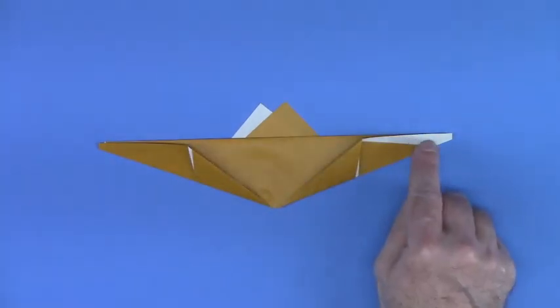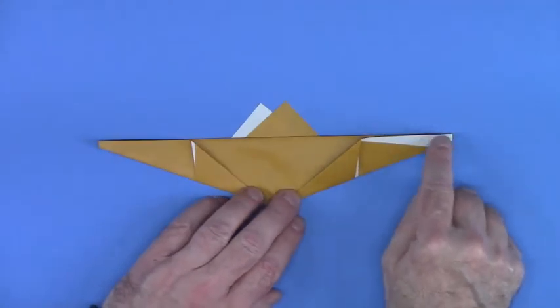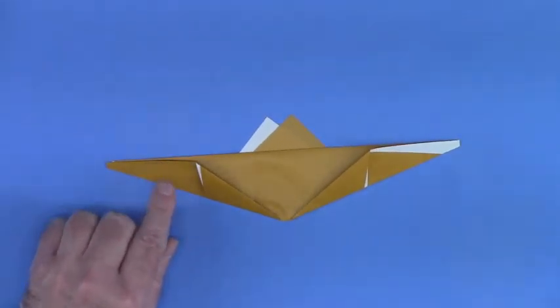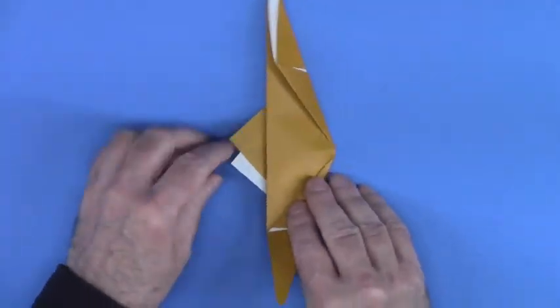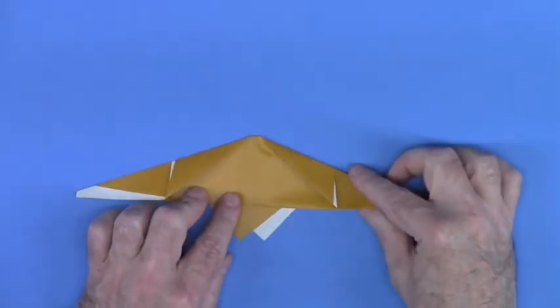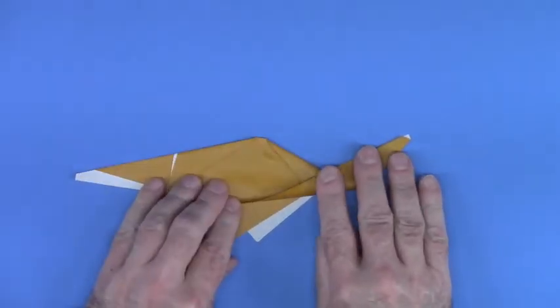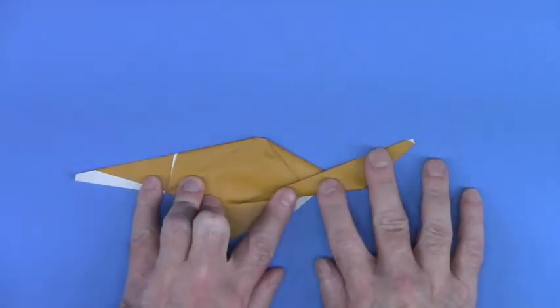The end that has more white showing, in this case, this is going to be the head and the other end will be the tail. Turn the paper around like this and fold over at an angle about like that.